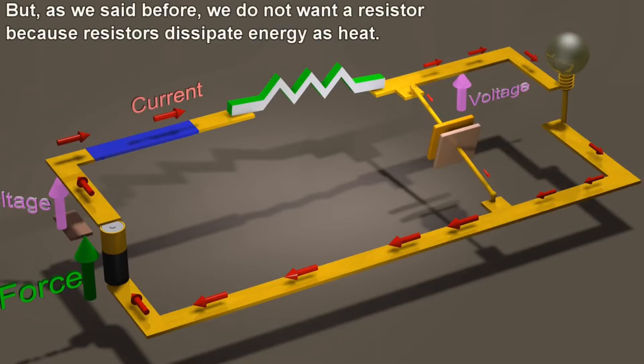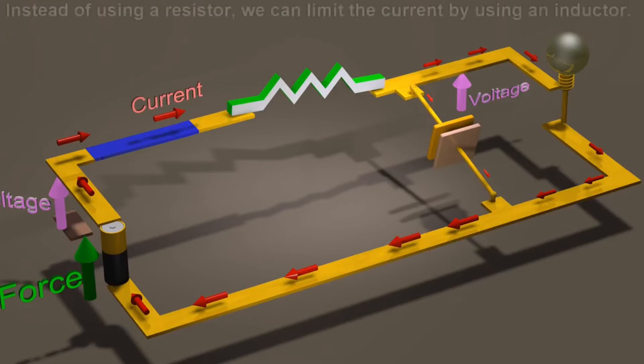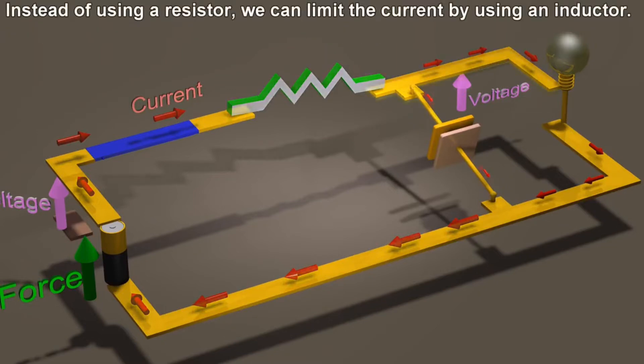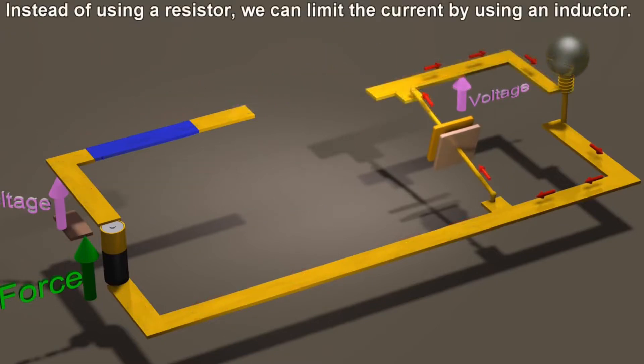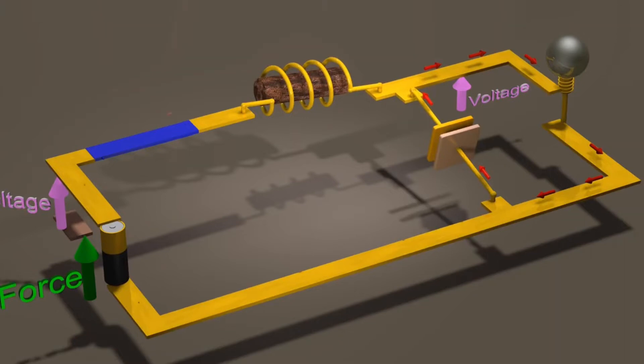But, as we said before, we do not want a resistor because resistors dissipate energy as heat. Instead of using a resistor, we can limit the current by using an inductor. An ideal inductor does not dissipate energy as heat at all.